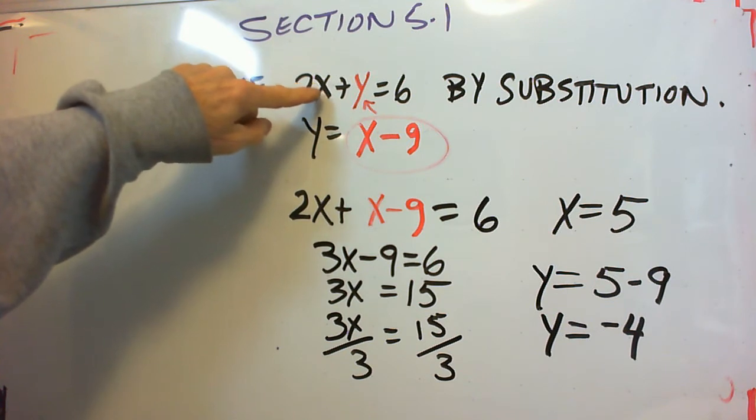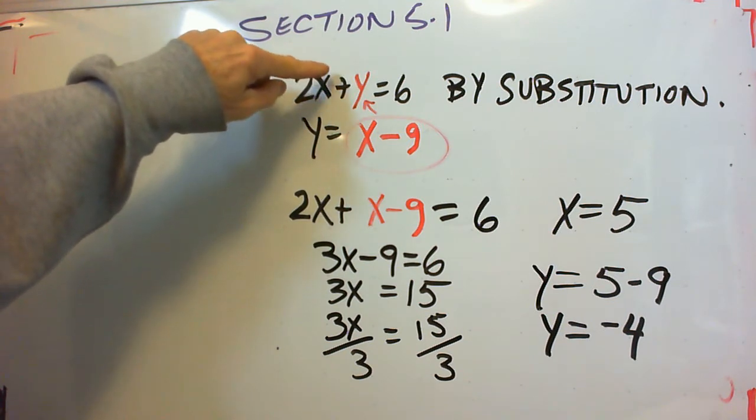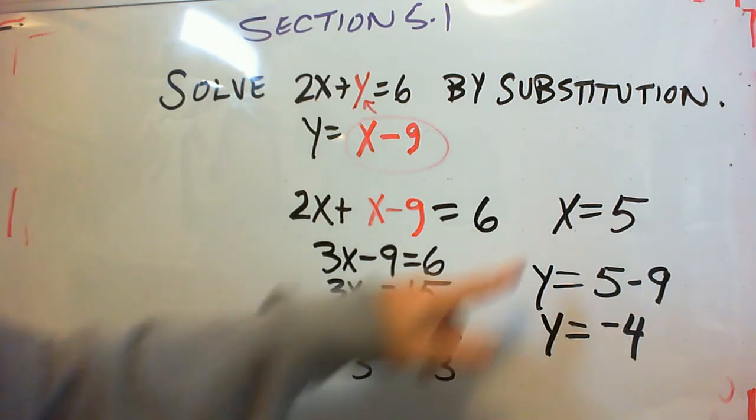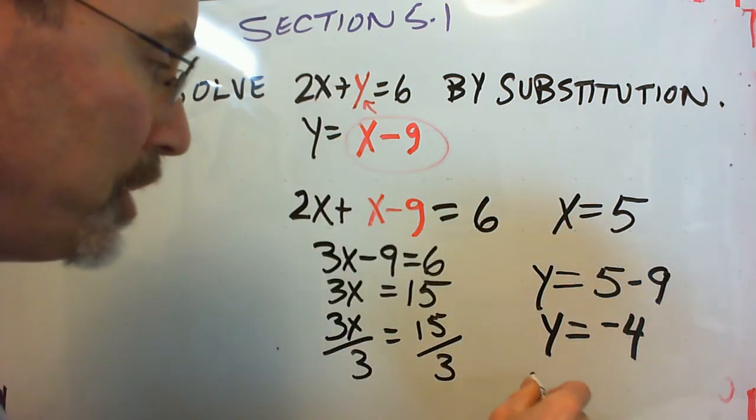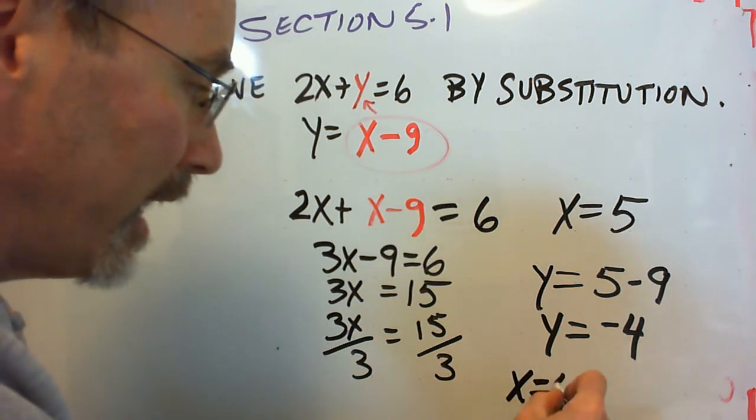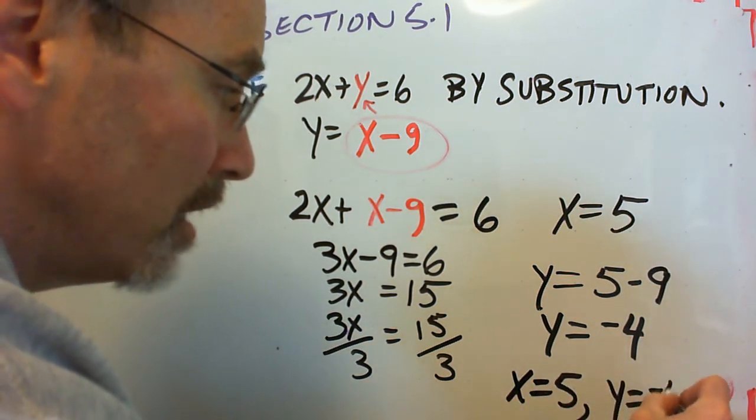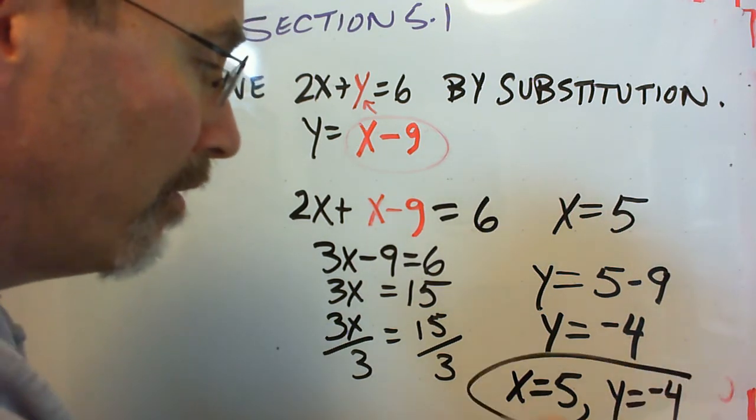And we can plug those two results in our first equation just to make sure it is the correct answer. When x is 5, we get 10 plus negative 4 makes 6. So the x and y work for both equations. That's how we check. And that's our answer to our system. X equals 5. Y equals negative 4.